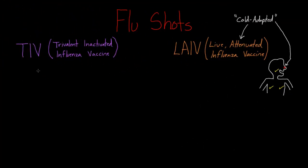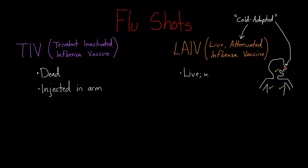TIV is dead and it's injected. In adults, it's usually injected in the upper arm — specifically in the deltoid muscle, as you'd see in pictures of people getting flu shots. In contrast, LAIV is alive but weak, and we give it in a different way. It comes in a liquid and gets squirted into the nose, which makes sense because the virus naturally would enter through the nose.